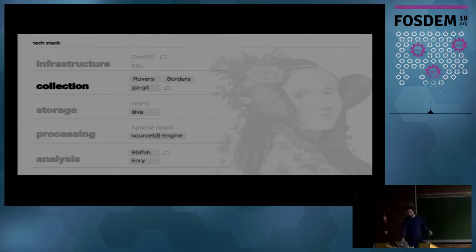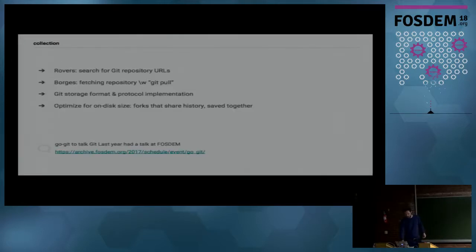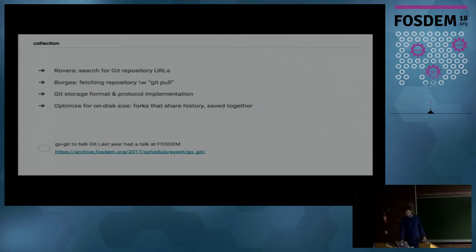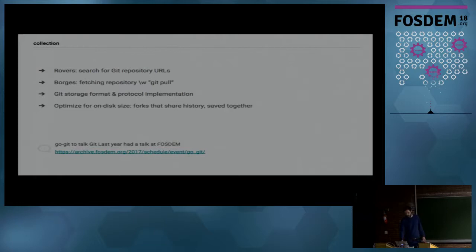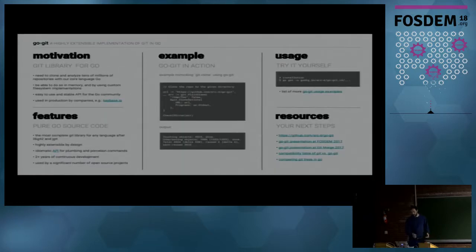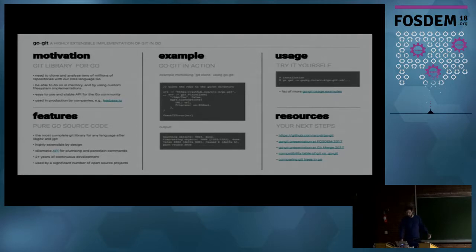On the collection part, once we have machines we want to get Git repositories. It consists of two parts: getting the URLs to those repositories and then cloning them. We focus on Git as the most popular version control system, so we need to speak the Git protocol. We implemented a custom implementation of the Git protocol and storage format called GoGit. There was a talk about it last year in the Go Language DevRoom. It's a pure Go implementation, one of the big five implementations of Git — very extensible. You can store things in memory, add custom protocols, or store things in a database.